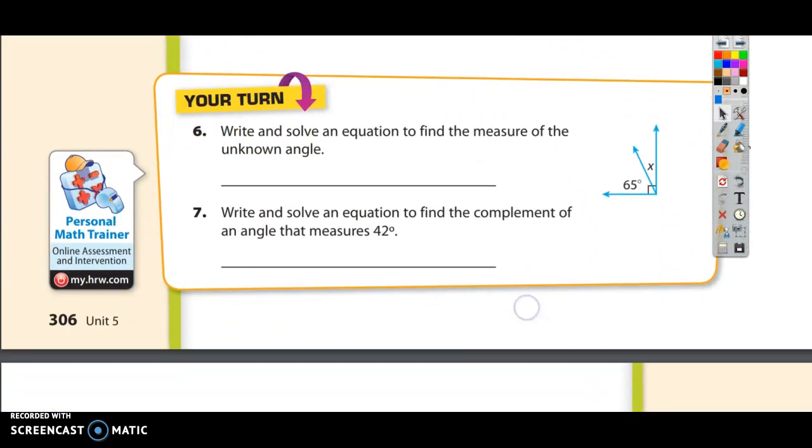We've got two problems here at the bottom. Number six reads, write and solve an equation to find the measure of the unknown angle. So let's pretend that this information was missing and let's pretend we didn't even have this line right here.